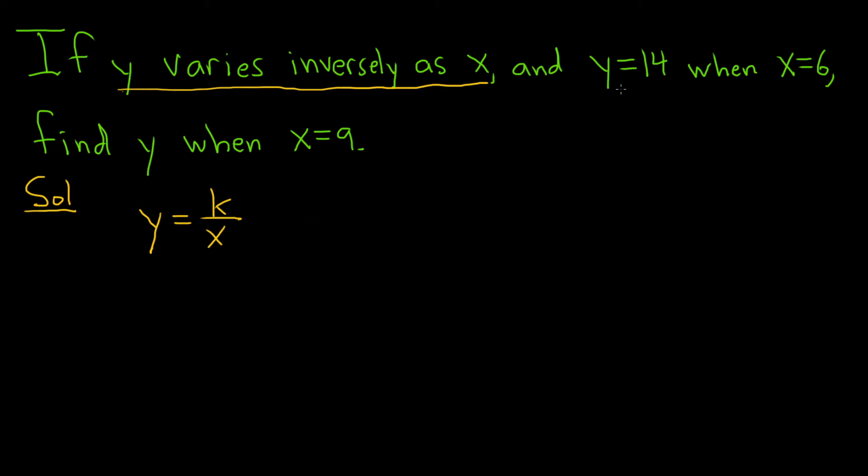All right, then it says, and y equals 14 when x equals 6. So now what we can do is we can take these numbers and plug them in and solve for k. So 14 is equal to k divided by 6. And we're looking for k, and it's being divided by 6, so we can multiply both sides by 6.